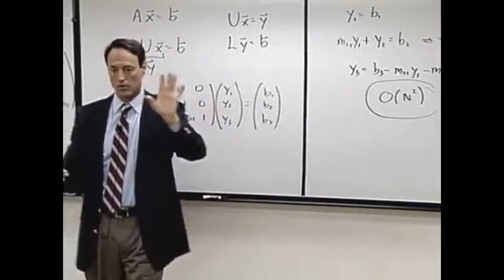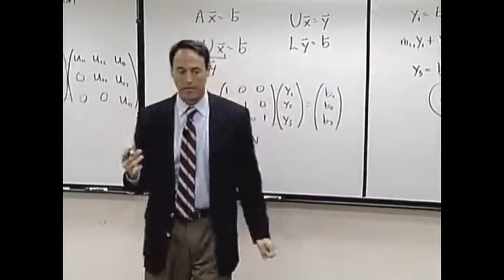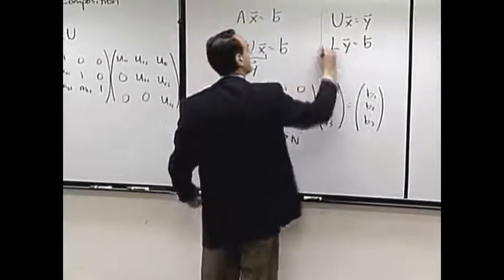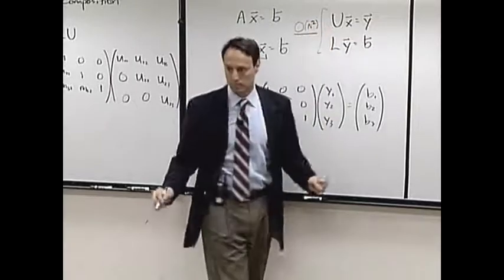Two order n-squared is just still order n-squared. All you care about is, you don't care about the factors in front. You just care about how does everything scale with n. So two order n-squared operations here.